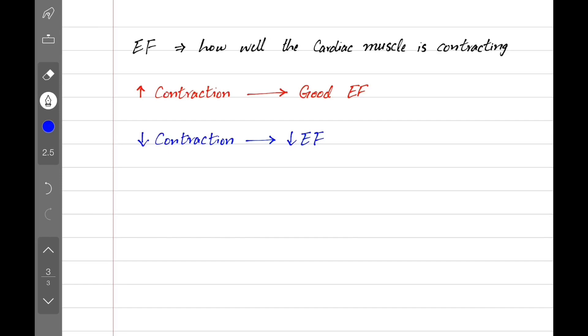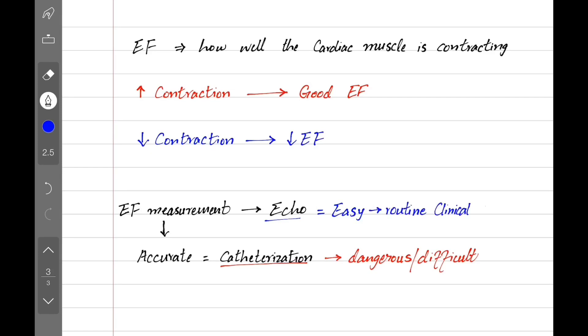That brings us to the question, how do we measure ejection fraction in real life? By doing echocardiography. And what's the best way to get a more accurate measurement? Cardiac catheterization. Doing a cardiac cath is potentially dangerous and difficult to perform because we have to put a catheter inside the heart. Echo is simple and easy. That's why echo is the first test of choice in routine clinical care.